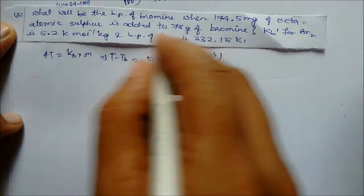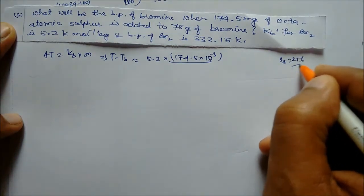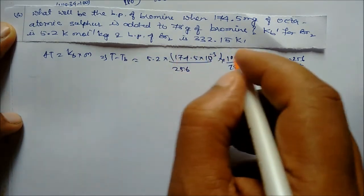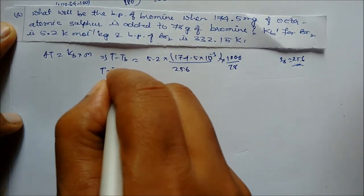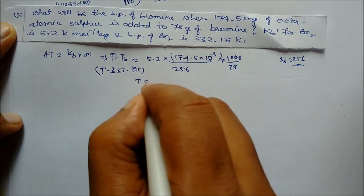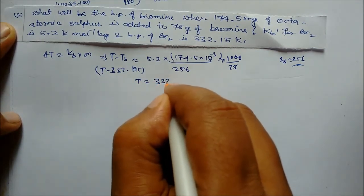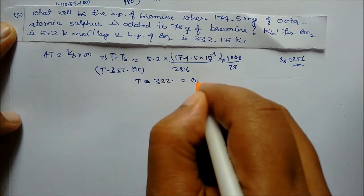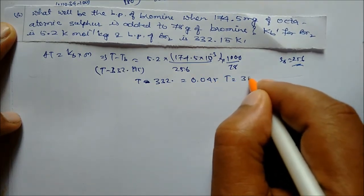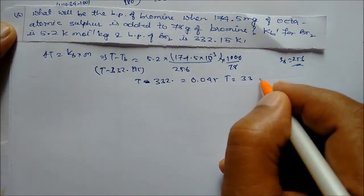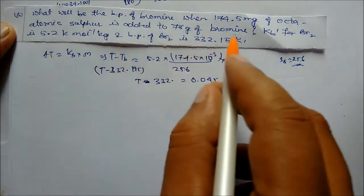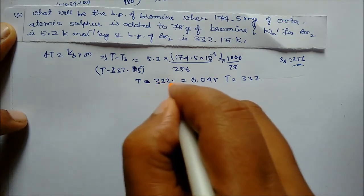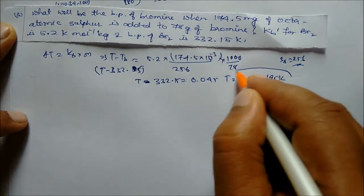The molar mass of octa-atomic sulfur (S₈) is 256. So: T - Tb = 5.2 × (174.5 × 10⁻³ / 256) × (1000 / 28). The boiling point of bromine is given as 332.195 K. Solving, delta T = 0.045, giving T = 332.195 + 0.045 = 332.24 K approximately.